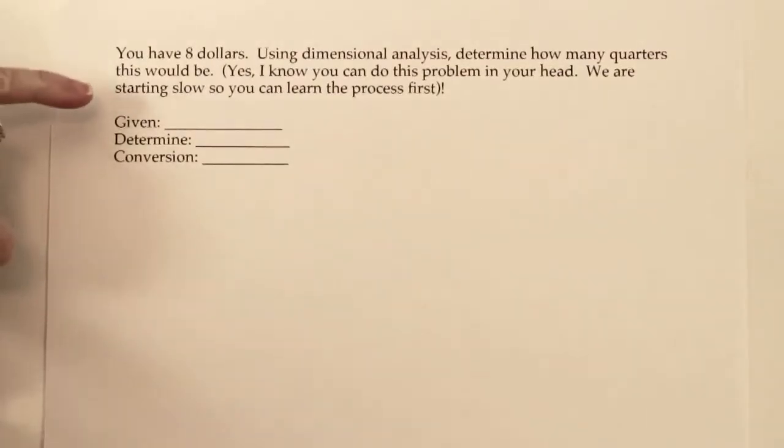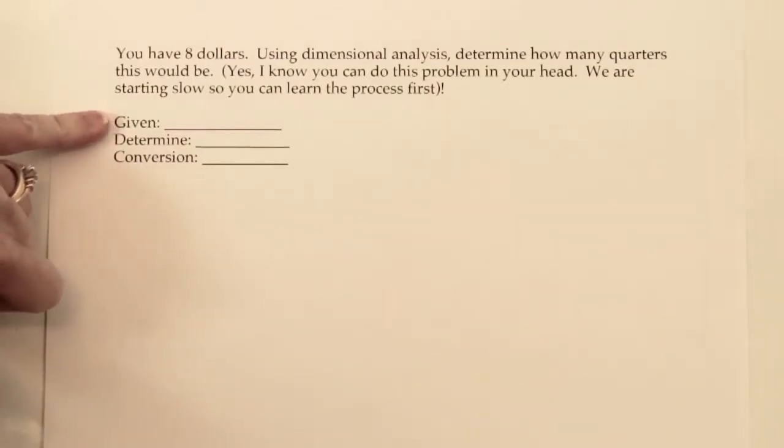For all factor label problems, especially when you're a beginner, I would recommend laying the problem out this way. The given is whatever piece of information you're told in the problem. The determine is what you're trying to figure out, where you're going. And the conversion is a conversion factor to get you from your given to where you're trying to go.